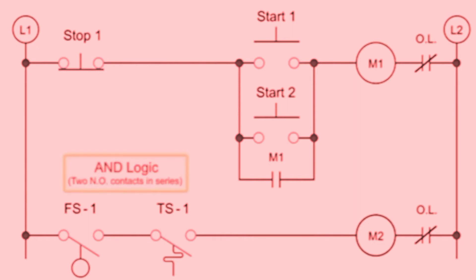AND logic is present when there are normally open control devices connected in series. Here we have two automatic switches. The motor coil M2 will only be energized if both floating switch 1 and temperature switch 1 are closed.